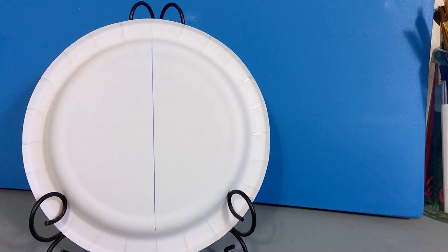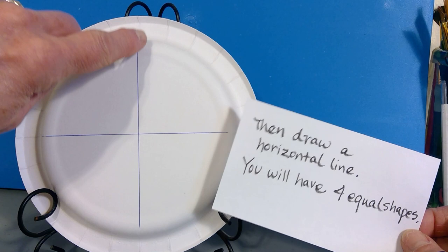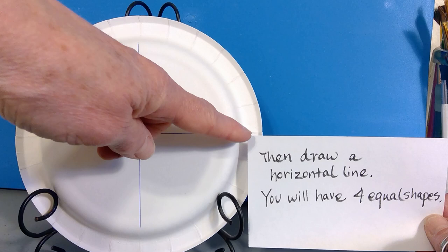The next step is that you're going to now take a ruler or straight edge and you've got your vertical line. Now you're going to create a horizontal line so that you will have four equal shapes.